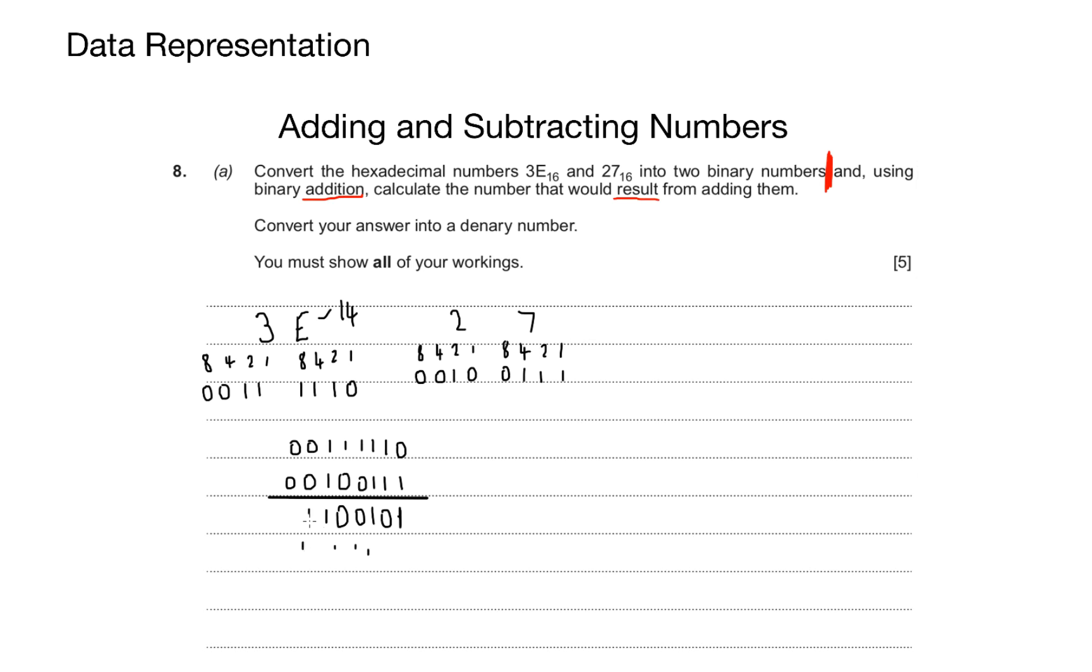Carry the 1 over. I've got 1, 1, and 1, that gives me 1. And then I have 0 and 0, but I have a 1 carry bit, and that gives me 1. And then to finish, 0 and 0, that gives me 0. Now I've performed my binary addition. What I need to do now is convert my answer into a binary number.